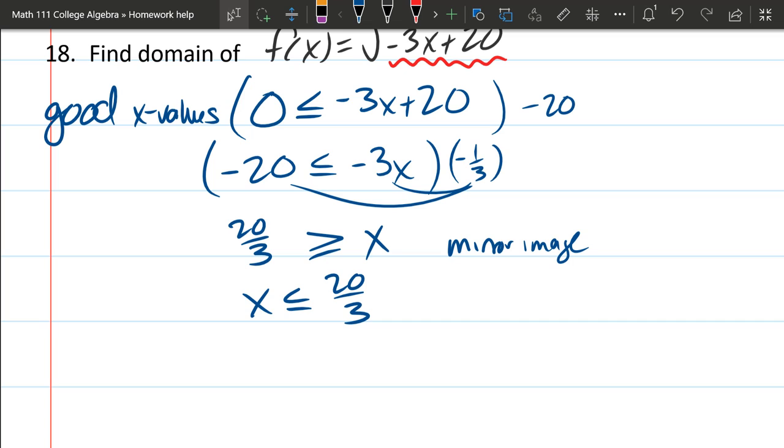Usually you're gonna want to answer in interval notation. So if I draw out, here's 20 thirds. And when the little is on the left, it's okay to be equal. So it'll be a square bracket here. There is no minimum value, so it goes all the way to negative infinity.